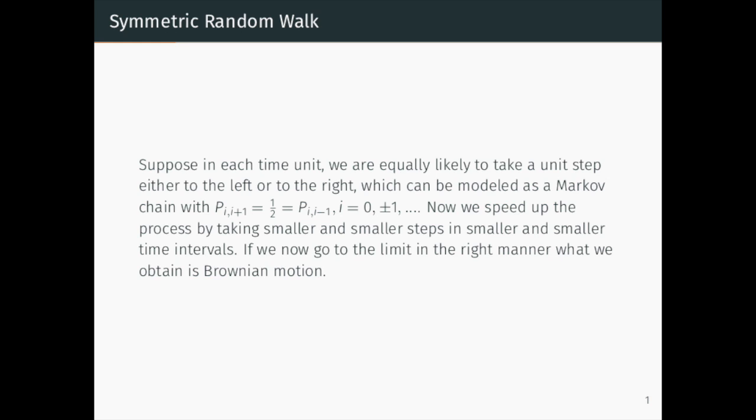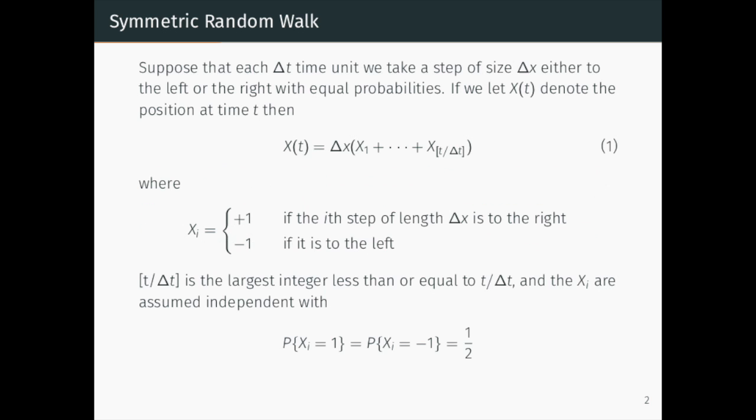Now suppose that we speed up this process by taking smaller and smaller steps in smaller and smaller time intervals. If we now go to the limit in the right manner, what we obtain is Brownian motion.